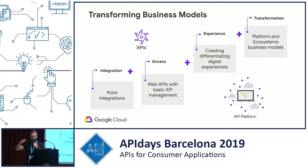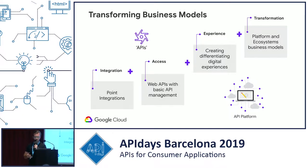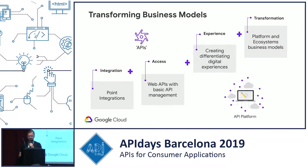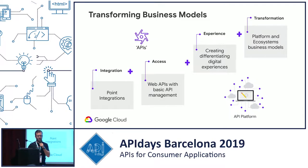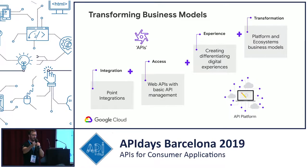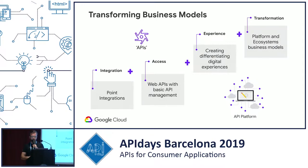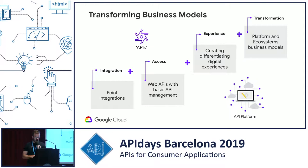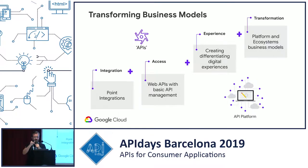The last step on the ladder is a transformation where people find new business models using those ecosystems and platforms. The best example is Google Maps — it's not just an application that helps you find a restaurant, it's also an API. The value of Google Maps is how easily developers can access the developer portal, find resources, and pay as they consume. That's why the Google Maps team is on the transformation side, and platforms are the software's way for people to exchange value.